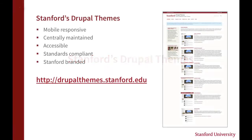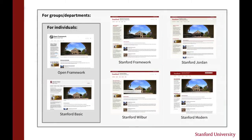Stanford's Drupal Themes — we've been through this in the last session. They are mobile responsive, centrally maintained, accessible, standards compliant, and Stanford branded. You can go to DrupalThemes.Stanford to find out information about them, learn how to download them, or request them. For individuals, we have non-Stanford branded themes: Open Framework and Stanford Basic. As of Tuesday evening, Open Framework will be available to everyone on Stanford sites. We also have Stanford branded themes, available for official university groups and departments.